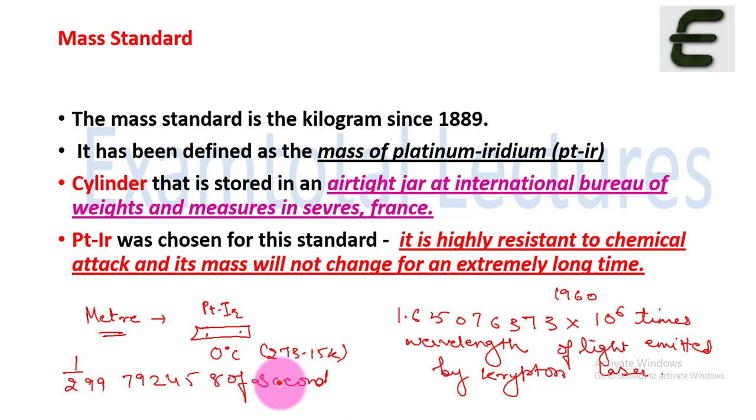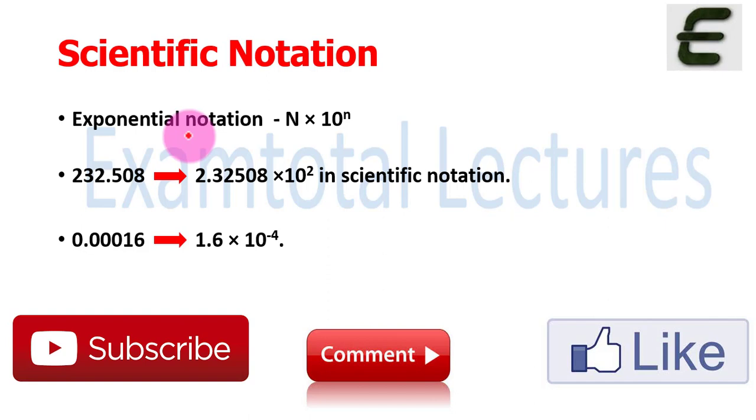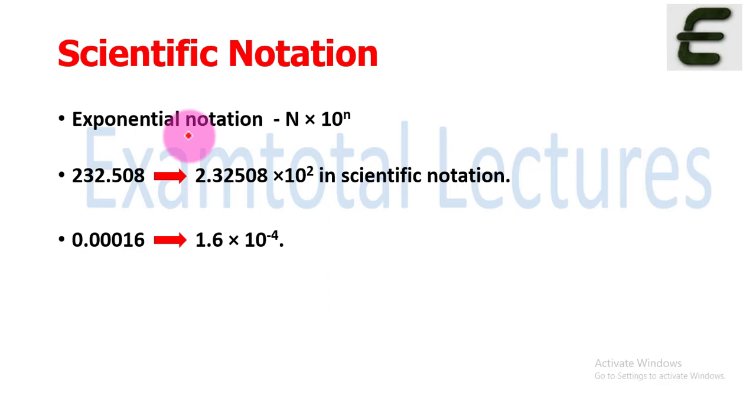When we experiment or do numerical calculations, values can be very big or very small. For that, you need to know scientific notation. From scientific notation, your calculation becomes very easy. In this form, we write values in exponential notation. In chemistry, we study atoms and molecules whose masses are very small or we deal with extremely large numbers like Avogadro's number. You cannot count one, two, three, four atoms or molecules.